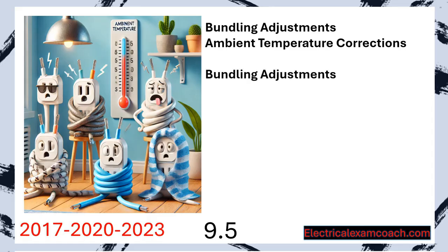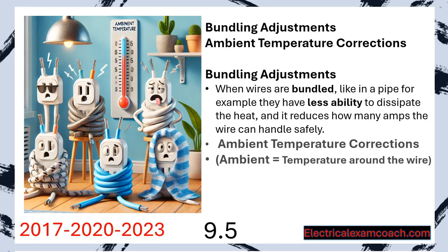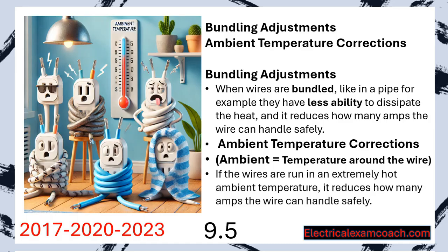Bundling adjustments work like this: when wires are bundled, like in a pipe for example, they have less ability to dissipate the heat, and it reduces how many amps the wire can handle safely. Ambient temperature corrections are like this: if wires are run in an extremely hot ambient temperature, it reduces how many amps the wire can handle safely. We're going to learn about these one at a time.